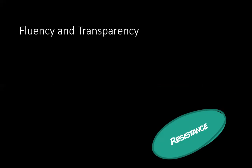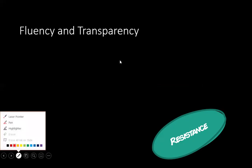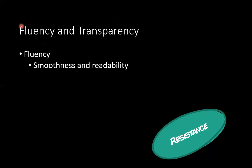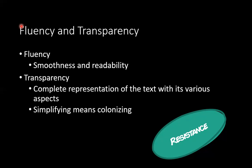In literary translation, this is related to the notion of fluency and transparency. The translator who wants to educate, who wants to get as much as possible from the original, is associated with transparency — they want to show everything that the original work has. But the second group, which wants to side with the reader and make the reader enjoy it, will lean towards fluency. They will do everything to make their translation fluent and enjoyable. So fluency relates to how a text will be smooth and readable in the target language, while transparency means complete representation of everything the text has.